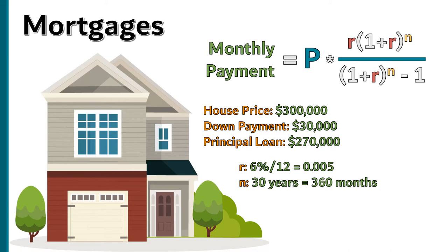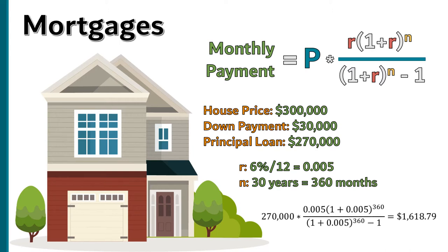Mortgages are usually paid monthly, so to find the monthly amount we need to put everything in monthly terms. With 12 months in the year, you take the six percent — which in decimal form is 0.06 — and divide it by 12 to get 0.005. Then 30 years times 12 months per year is 360 months. When you plug those in and use a calculator to solve, you get a monthly payment of $1,618.79.